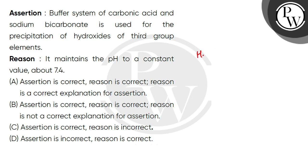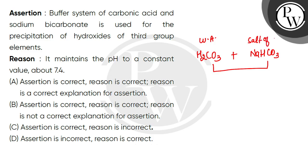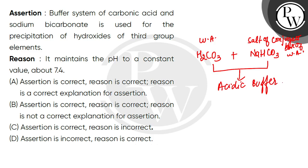Carbonic acid is H2CO3 and sodium bicarbonate is NaHCO3. What is the weak acid? What is the salt of the conjugate base of the weak acid? What is the buffer solution? It will be an acidic buffer, because you have taken a weak acid. So, they say that the acidic buffer is used to precipitate out the hydroxides of the third group elements.